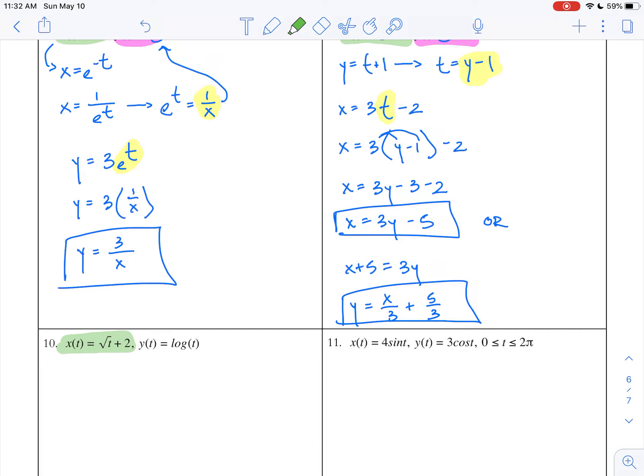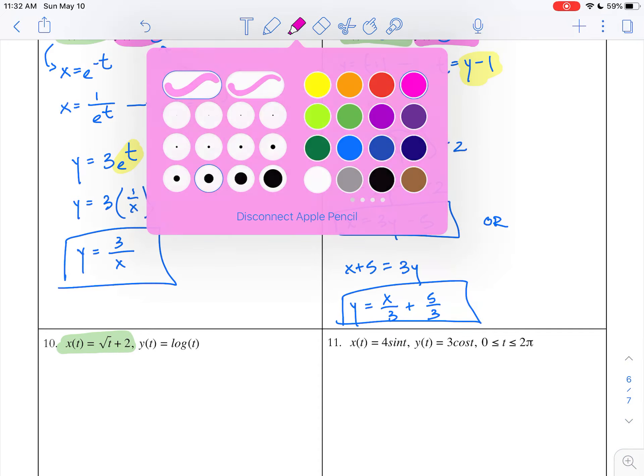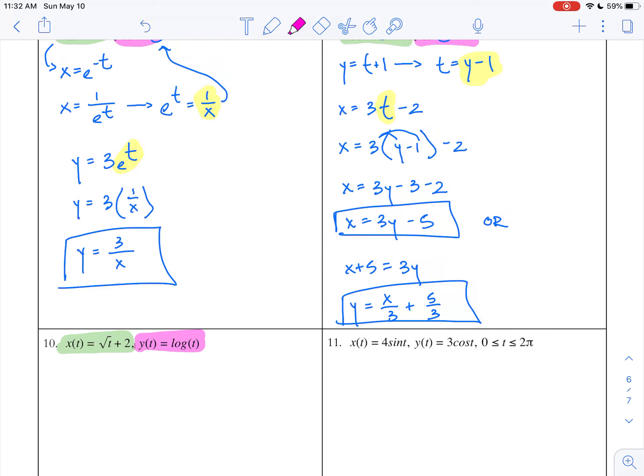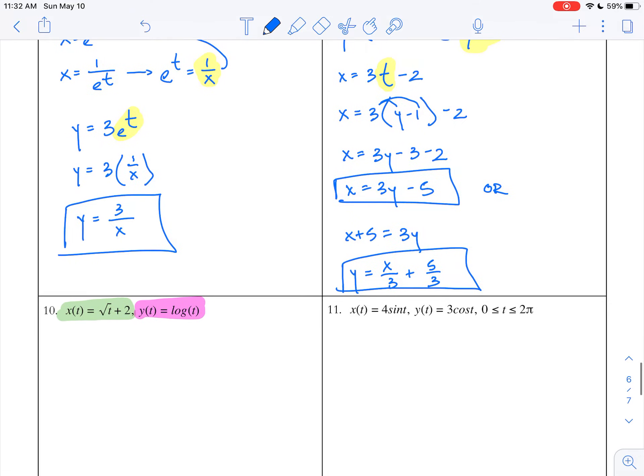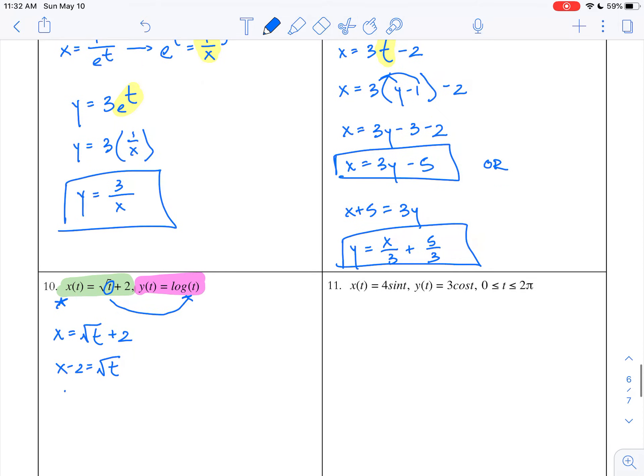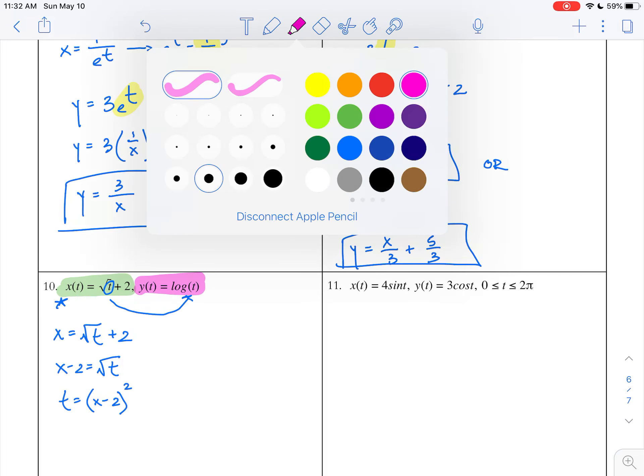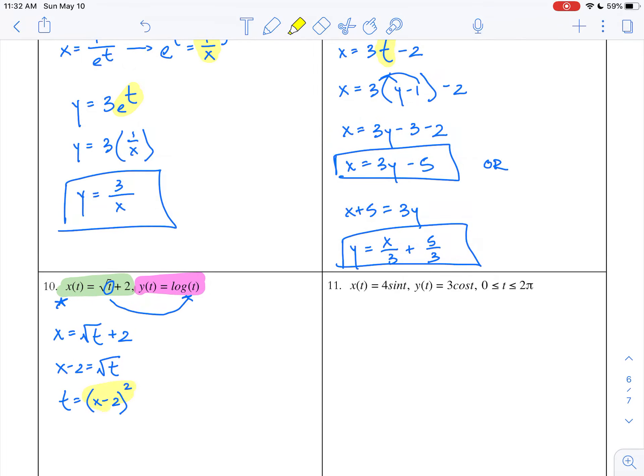Let's take a look at number 10. I've got x(t) = √(t+2) and y(t) = log(t). I'm going to take the green equation and get t by itself, then plug whatever I get into the pink equation. So x = √(t+2), or x - 2 = √t, or t = (x-2)².